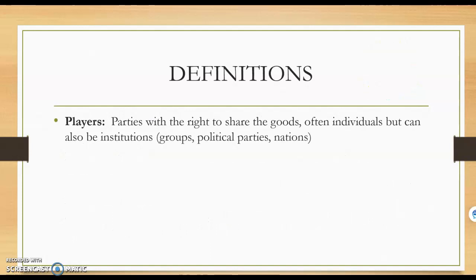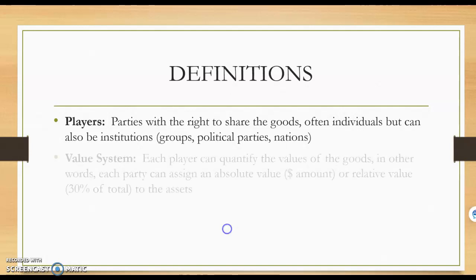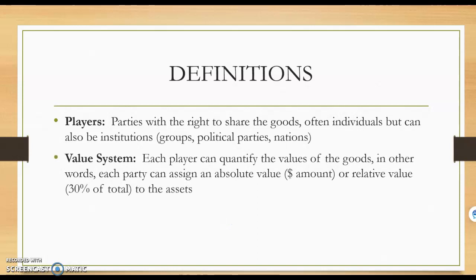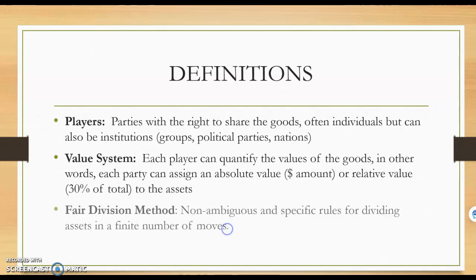The players are simply the parties with the right to share the goods. It's oftentimes an individual, but it can also be an institution like a group, a political party, or a nation. We have a value system where each player can quantify the value of the goods — they can assign either an absolute value (a dollar amount) or a relative value (a percentage of the total) to the assets being divided. A fair division method is a non-ambiguous, specific set of rules for dividing assets in a finite number of moves.